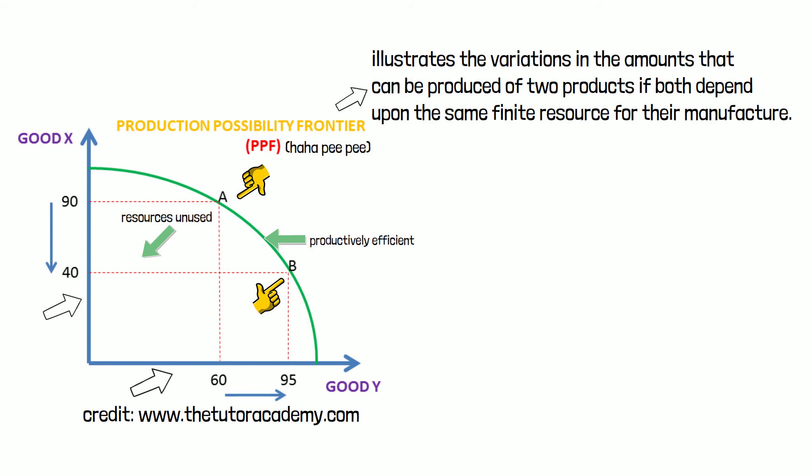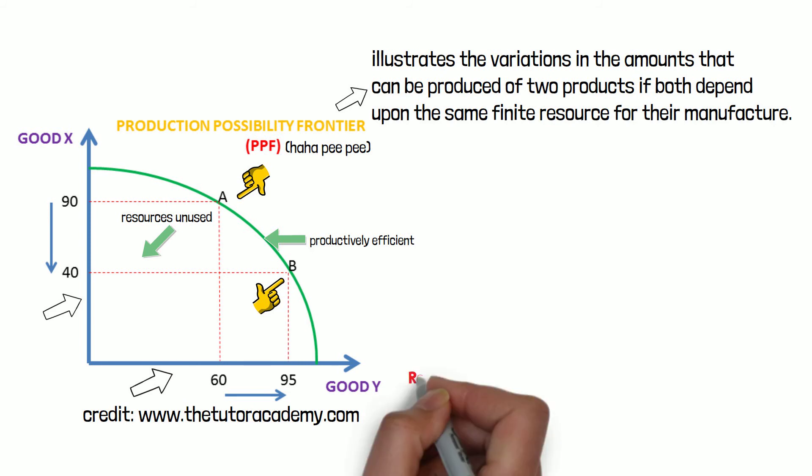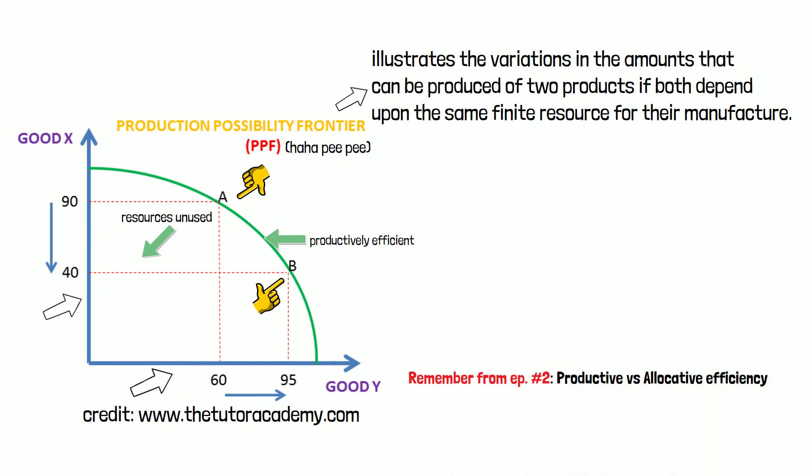However, not all points on the curve are allocatively efficient, because not all points will reflect the production of goods that people want or need. Maybe people need more of X than Y, for example.